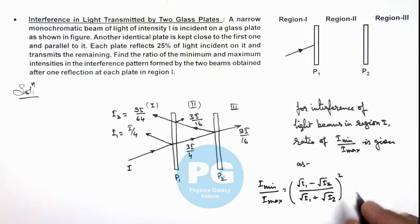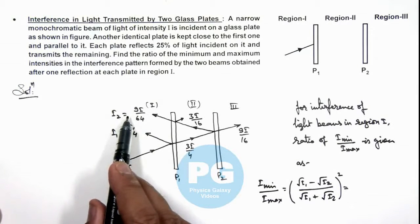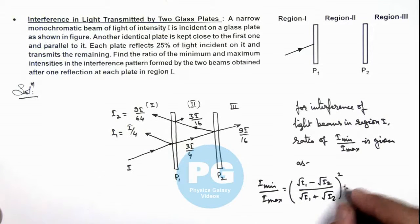So if we substitute the values over here you can see I₁ is I/4 and I₂ is 9I/64. Here I gets canceled out if we take the root.